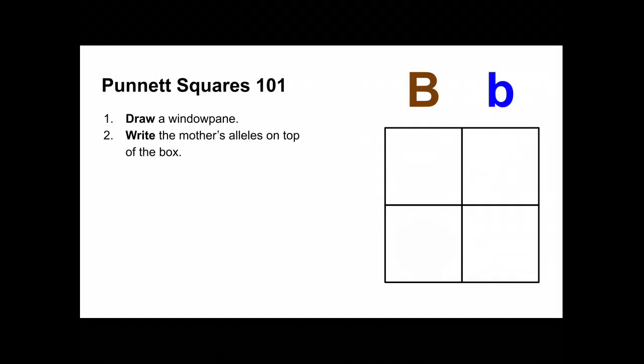So we're gonna be doing a Punnett square for eye color. The mother has brown eyes and she is big B, little b, heterozygous, hybrid for her brown eyes.